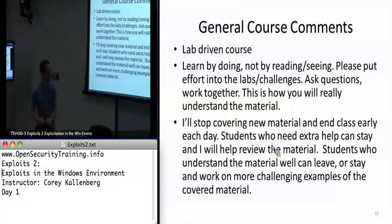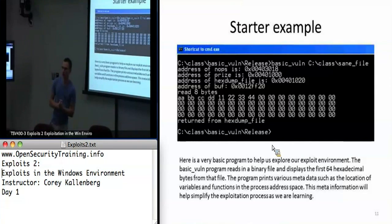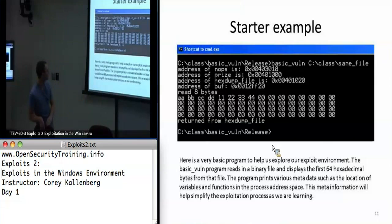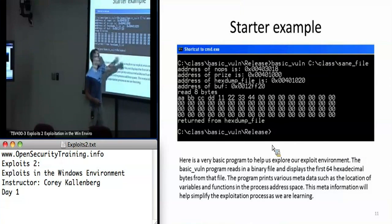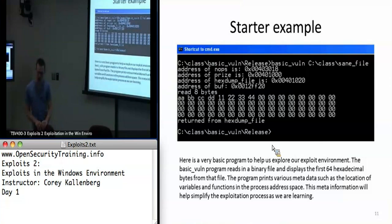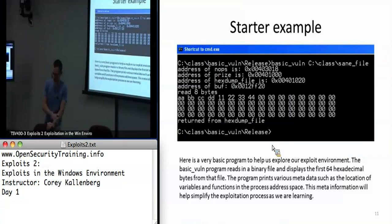Please put as much effort into the labs as you can — that is really how you're going to digest this material. So this is the first program we're going to be exploiting: BasicVolm. In your virtual machine, in the C:\class directory, you'll find BasicVolm. It reads in a file and tries to display the hex dump of the file — kind of like a really crappy hex dump thing. There's no secret where the vulnerability is — I'm giving you the source code. It's a very vanilla stack overflow, just re-familiarizing ourselves with the basics. I promise things will get more exciting and harder as the class progresses.